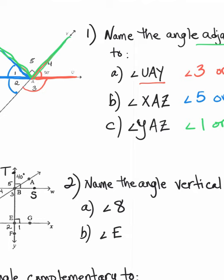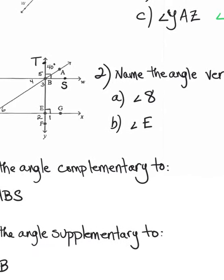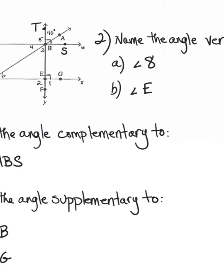Now let's take a look at question number two. We're looking to name the angle that's vertical. Remember, vertical is where angles make opposite V symbols — they share the vertex but are opposite to one another. Here we're looking for the angle vertical to number eight. Angle eight is right here, and the angle that opens in the opposite direction but shares the same vertex would be angle number six.